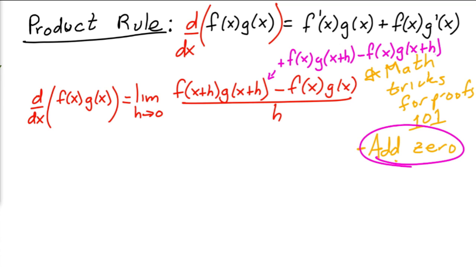And so then notice here that if you combine these two, you can factor this out. This is equal to the limit as h approaches 0. Notice how they have an f(x) in common, so you can factor the f(x) out.